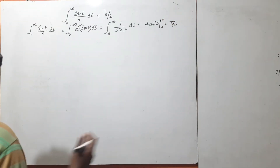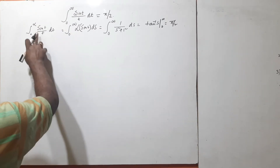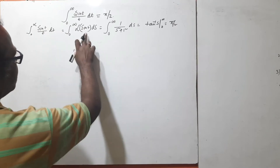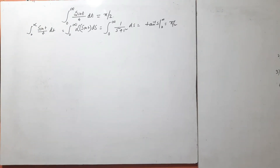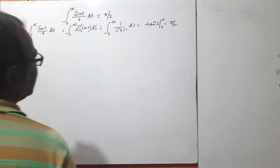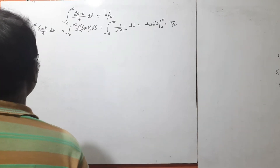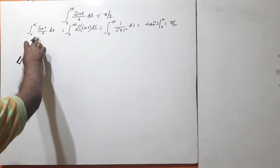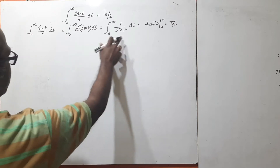This problem looks very easy, but how is it possible to go from this step to this step, and from this to this? This is the main point of the problem. Students, see here what the Laplace transformation property we used is — how we get from this to this, and from this to this.